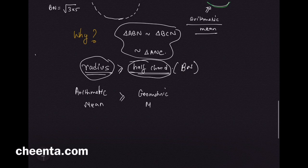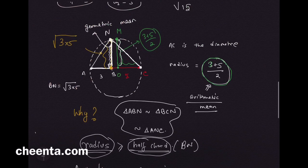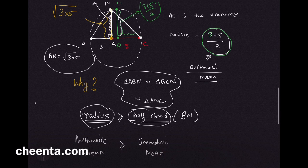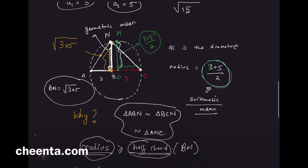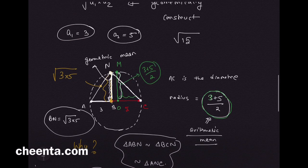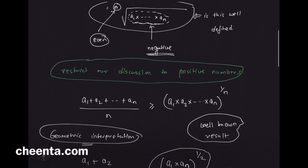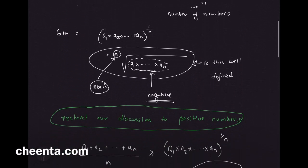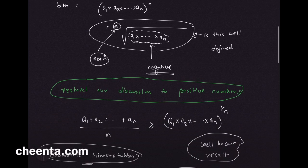This is wonderful, right? Can you show this rigorously, that BN is indeed square root of 3 times 5? Then you have finished this construction with a proof. Keep on doing wonderful mathematics. We will meet soon again in the next video.